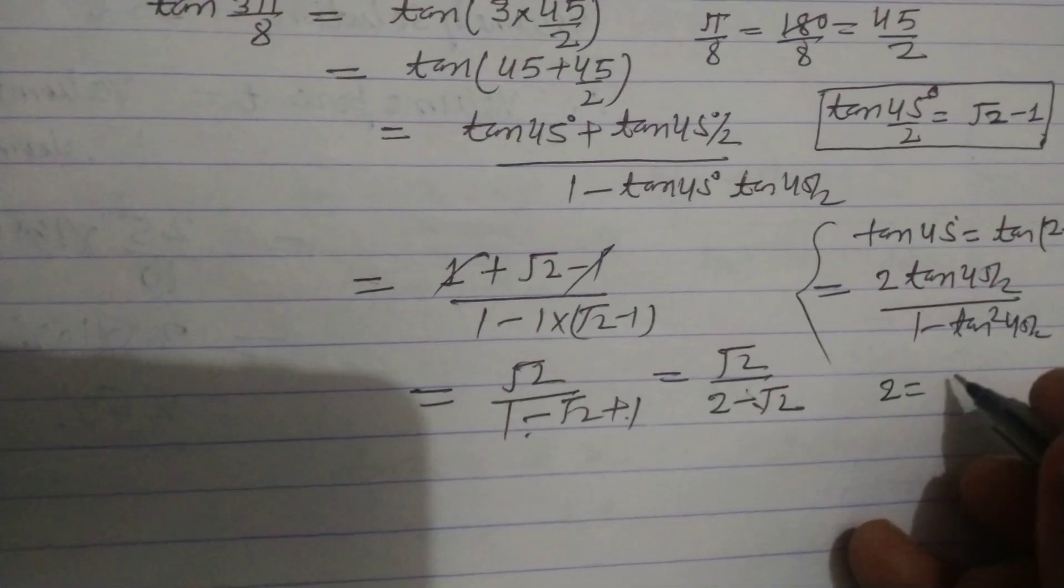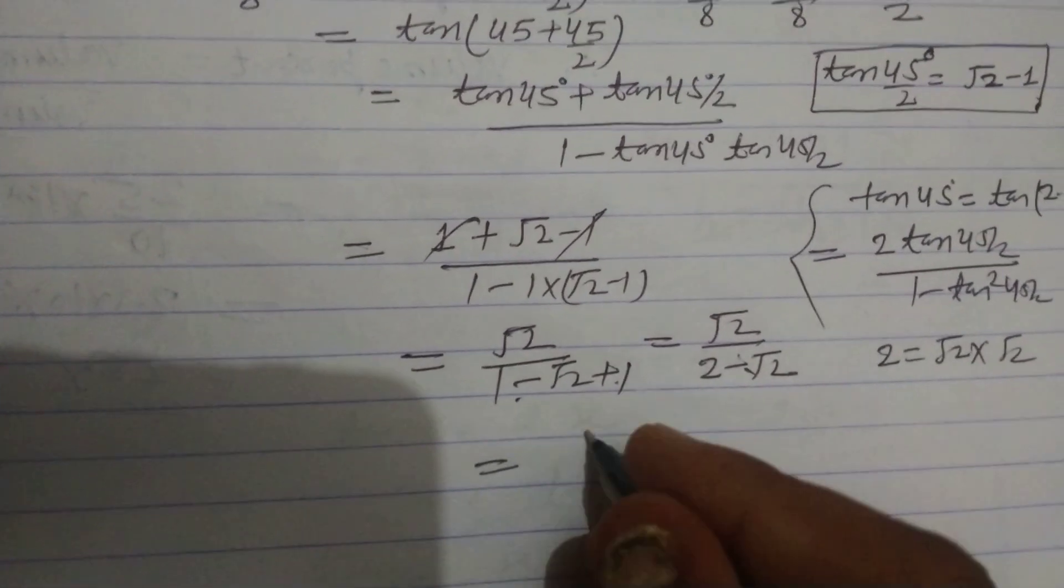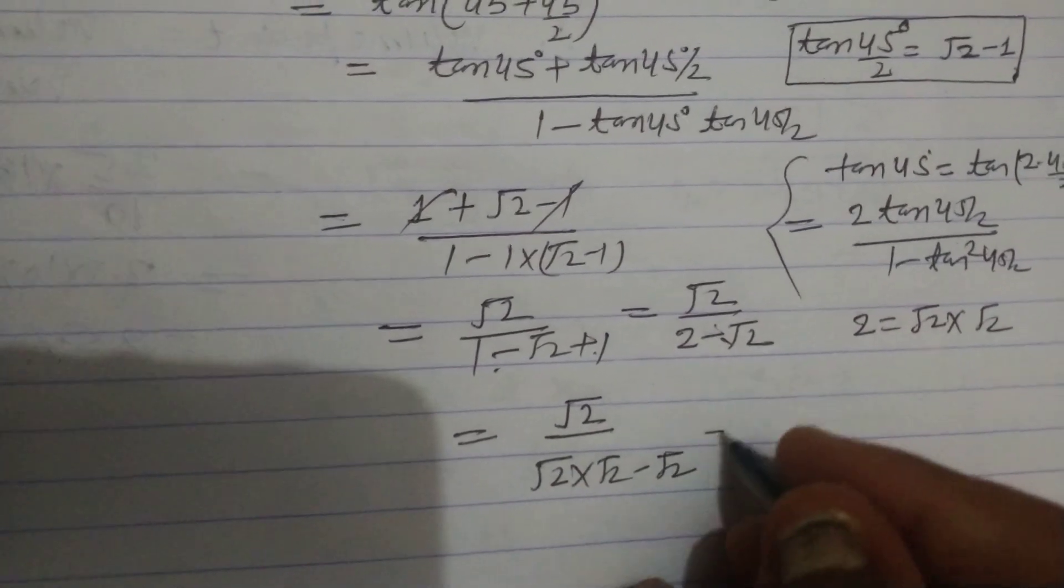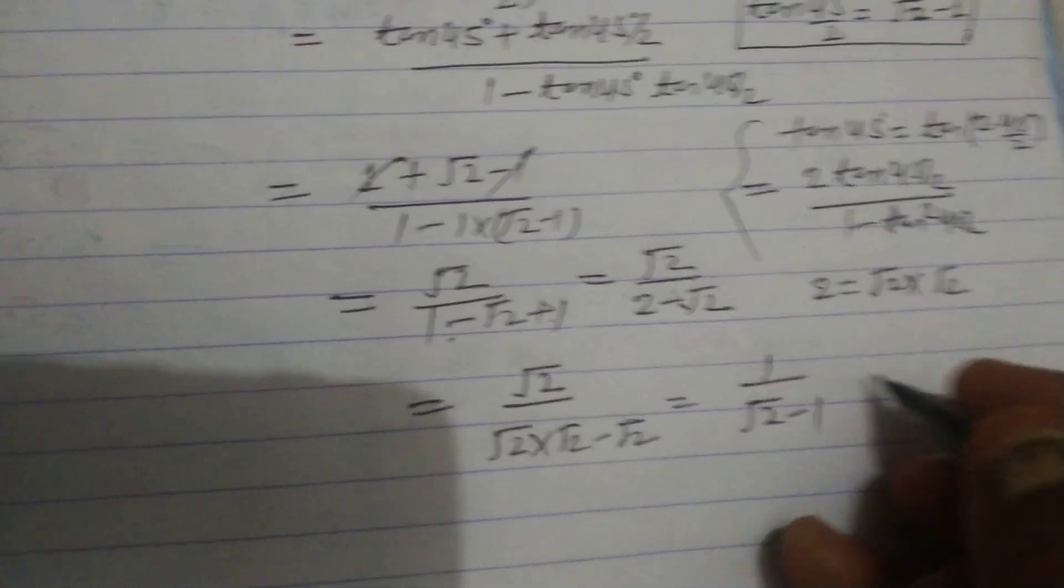2 can be written as √2 × √2. Therefore √2 upon √2×√2 - √2 cancels, so we get 1 upon √2 - 1.